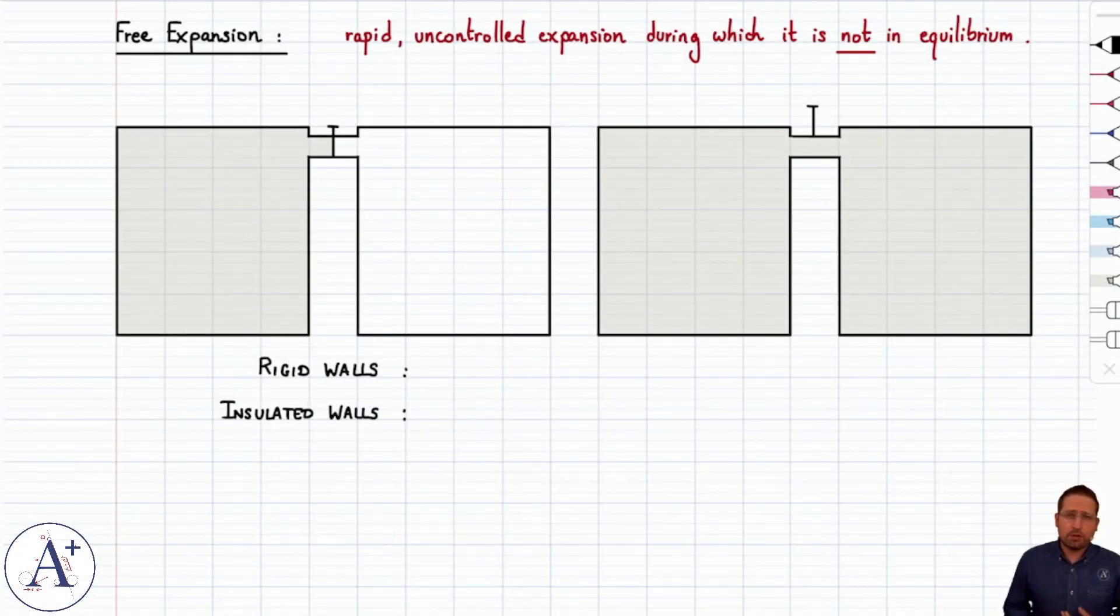Up to this point, all the thermodynamic transformations that we've considered have been quasi-static and reversible, and therefore let's talk about one that for once is not reversible, and that's the free expansion.